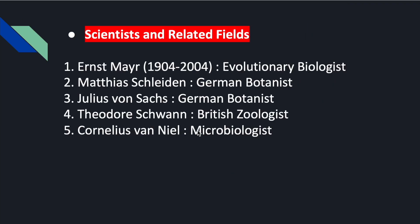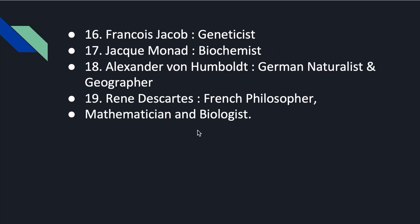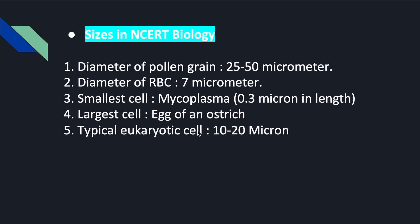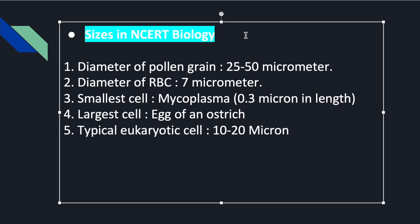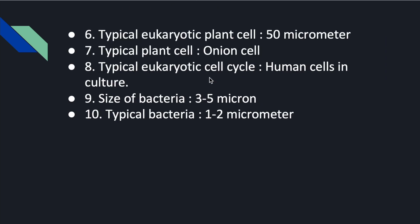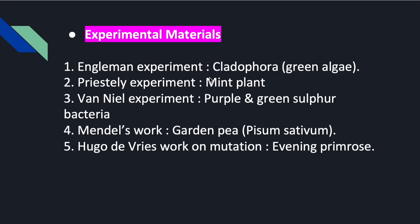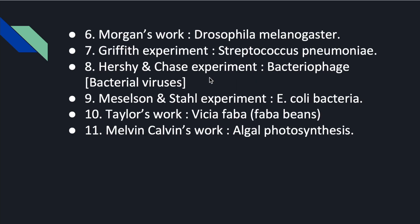In this fact book, I have included scientist names, their related fields, and many interesting facts — particularly the sizes mentioned in NCRT. Different sizes are given in NCRT and I have covered those. Apart from that, I have covered experimental materials — the scientists behind many experiments and what they used.